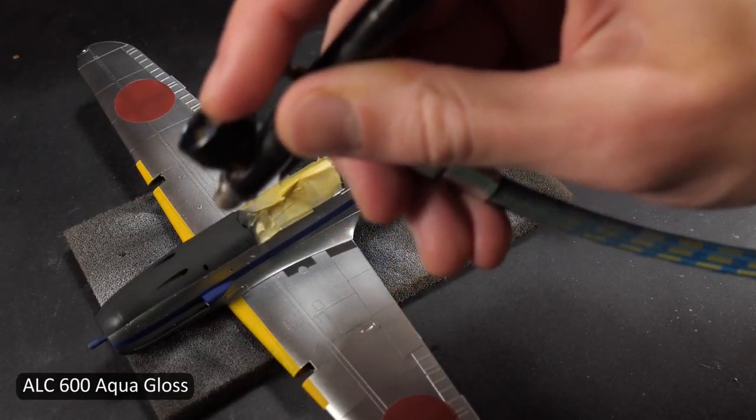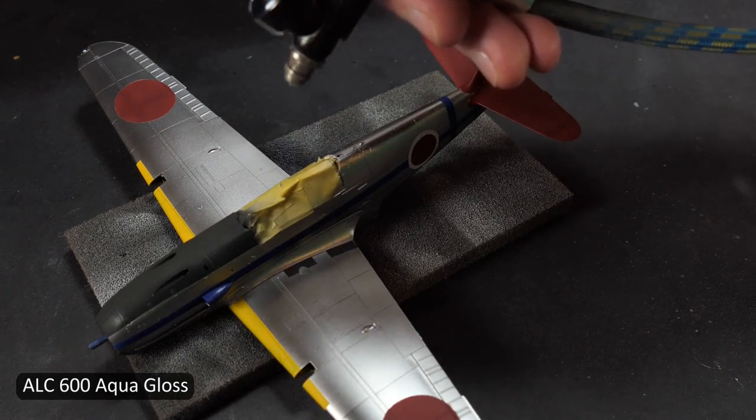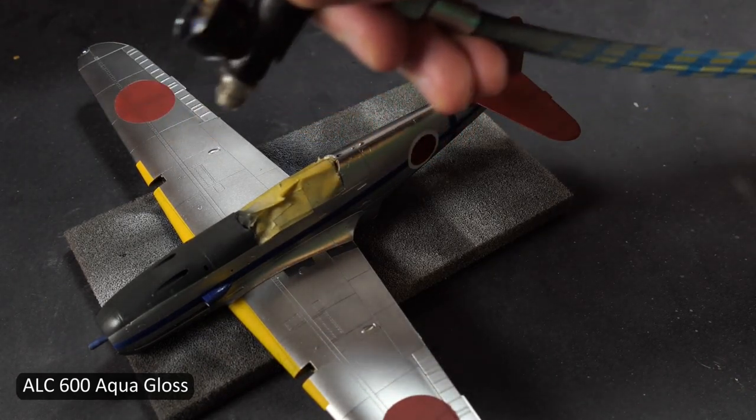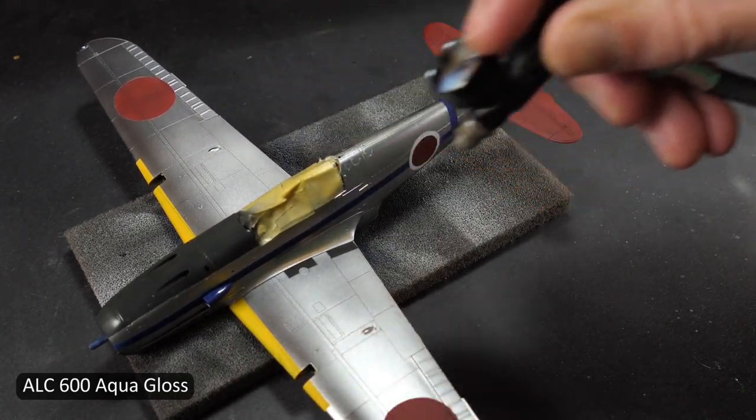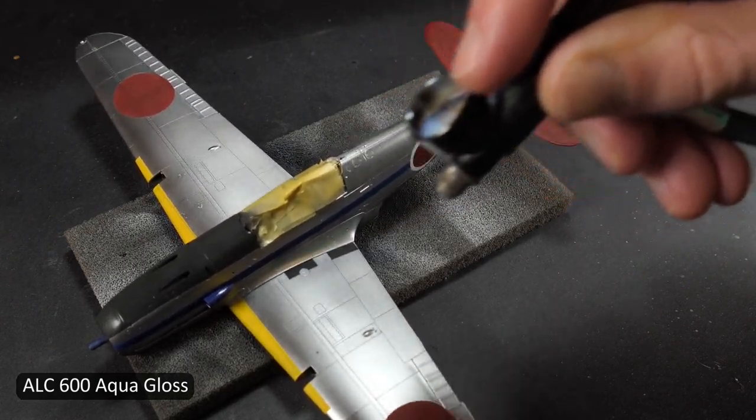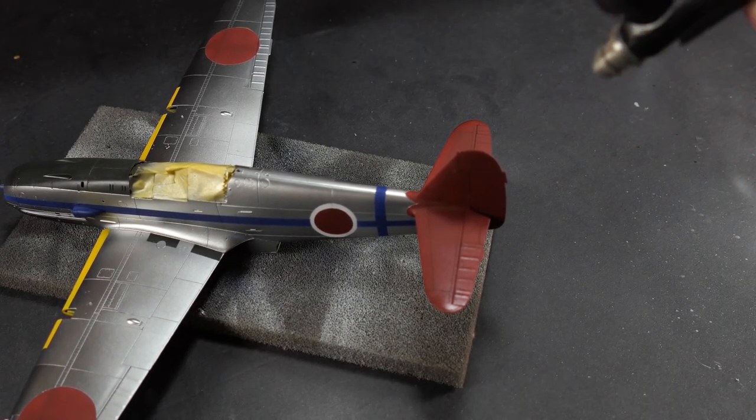I'm using Aqua Gloss as a clear coat because it's water based and using something like Mr. Color Super Clear could react poorly with the All-Clad and just ruin the finish.